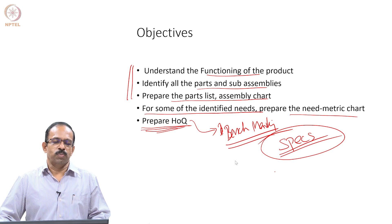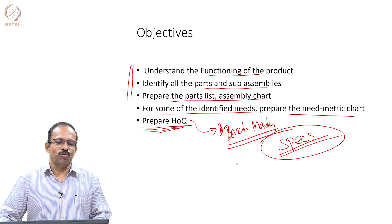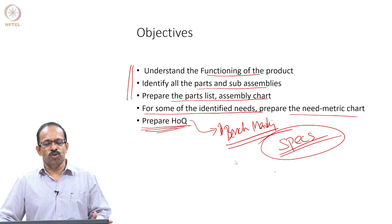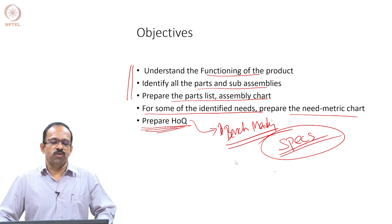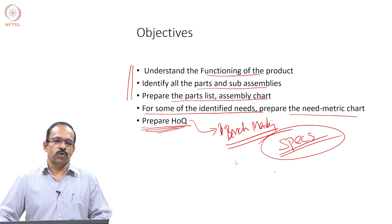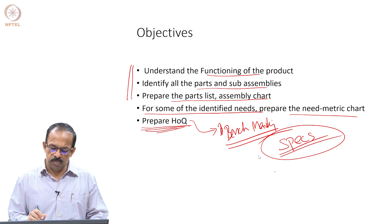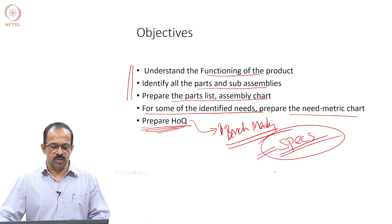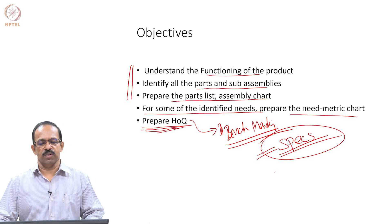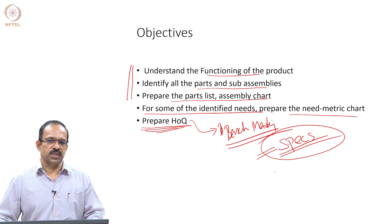For example, what should be the weight of the product, or what should be the temperature at which it should be heated, or what should be the time it should take to reach a particular temperature. Those things should be specified, and that becomes the design specification for the product. This is what is expected from you in this exercise.